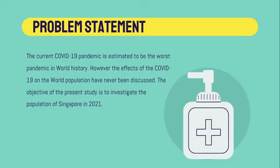Problem statement. The current COVID-19 pandemic is estimated to be the worst pandemic in world history. However, the effects of COVID-19 on the world population have never been discussed. The objective of the present study is to investigate the population of Singapore in 2021.